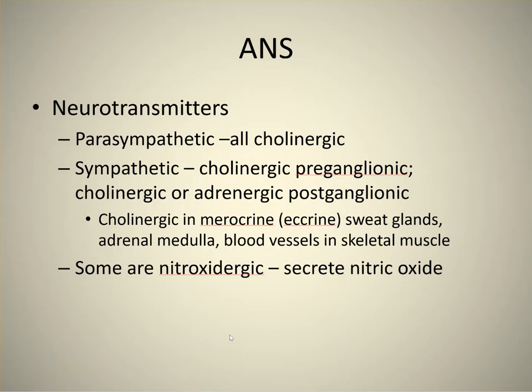This is the last slide in this mini-version — I'm splitting this chapter into three parts and stopping here at the neurotransmitters. The parasympathetic nervous system is all cholinergic, meaning it uses acetylcholine. Both the preganglionic axon and the postganglionic axon secrete acetylcholine.